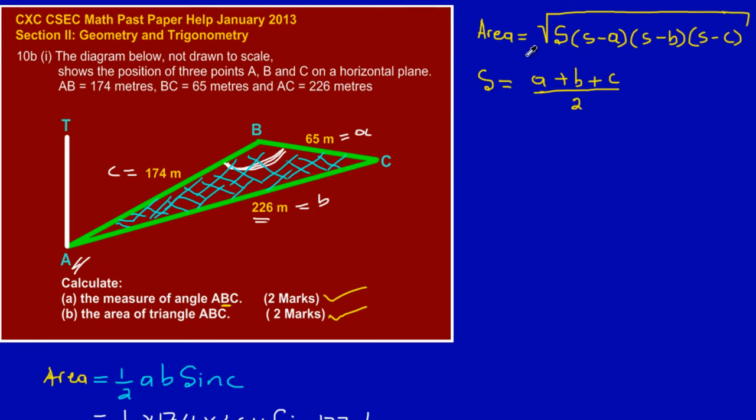Here I have the Heron's formula, and Heron's formula states that area is equal to the square root of s times open bracket s minus a close bracket, multiplied by s minus b, multiplied by s minus c. Now s really represents the semi-perimeter, and a, b, and c represent the length of each side on our triangle.